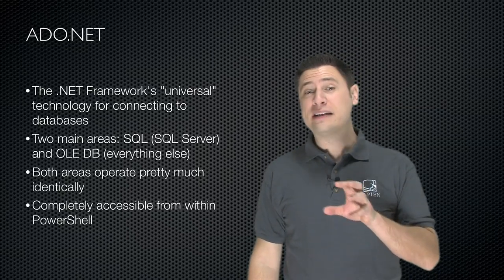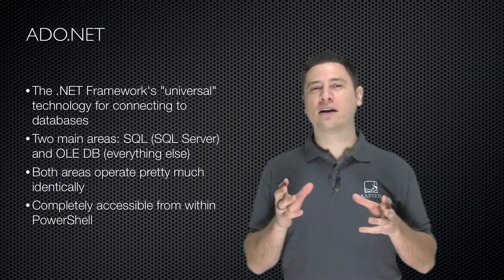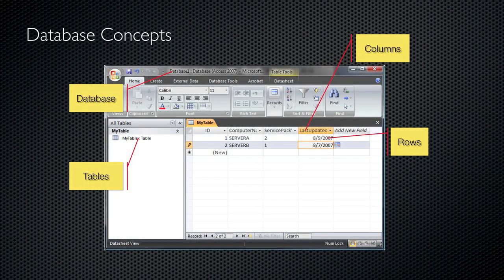Before we dive in, let's come to the same page on some terminology. Here's Microsoft Access showing a sample database. The file itself — the ACCDB or MDB file — is the database. Within it, you'll find one or more tables, each with a name. Within each table are columns, which have a column name, and rows, which contain the data for the columns.